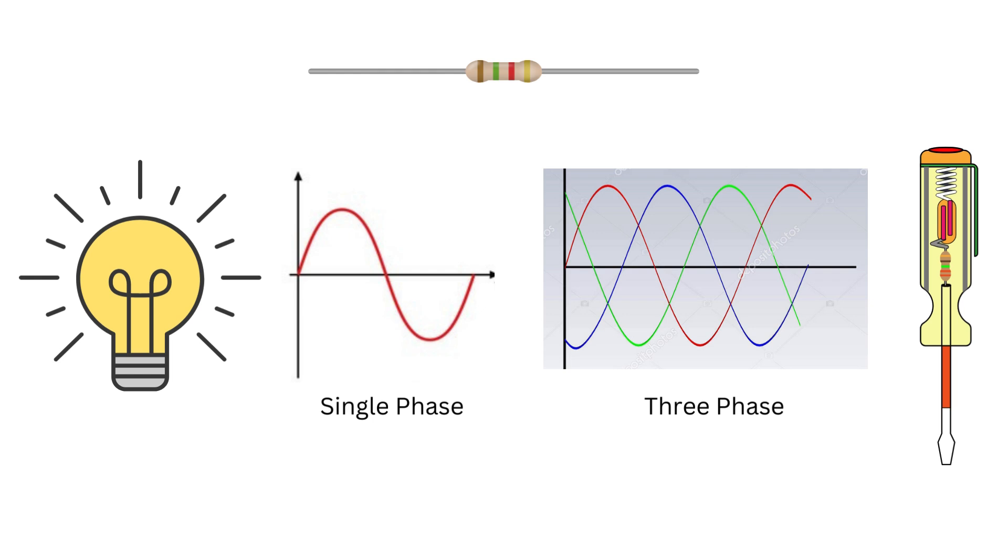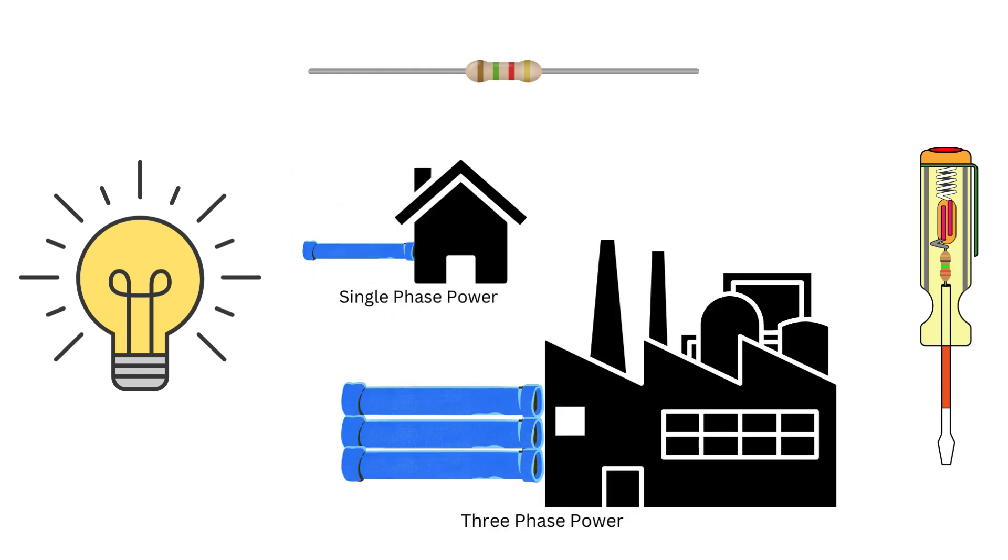To put it simply, single phase power is like having a single pipe supplying water to your home, adequate for daily needs. Three phase power is like having three pipes supplying water to a factory, more efficient and capable of handling much bigger demands.